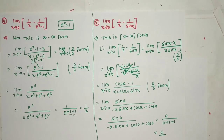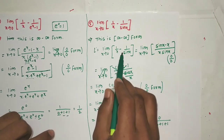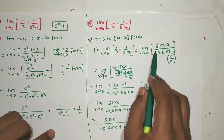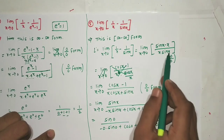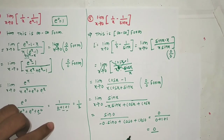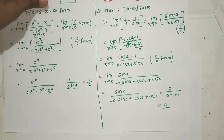Last problem of this lecture: limit x tending to 0 of [1/x - 1/sin(x)]. This is again infinity minus infinity form. After cross multiplication we get [sin(x) - x] / [x·sin(x)]. This is 0/0 form, so we apply L'Hôpital's rule.